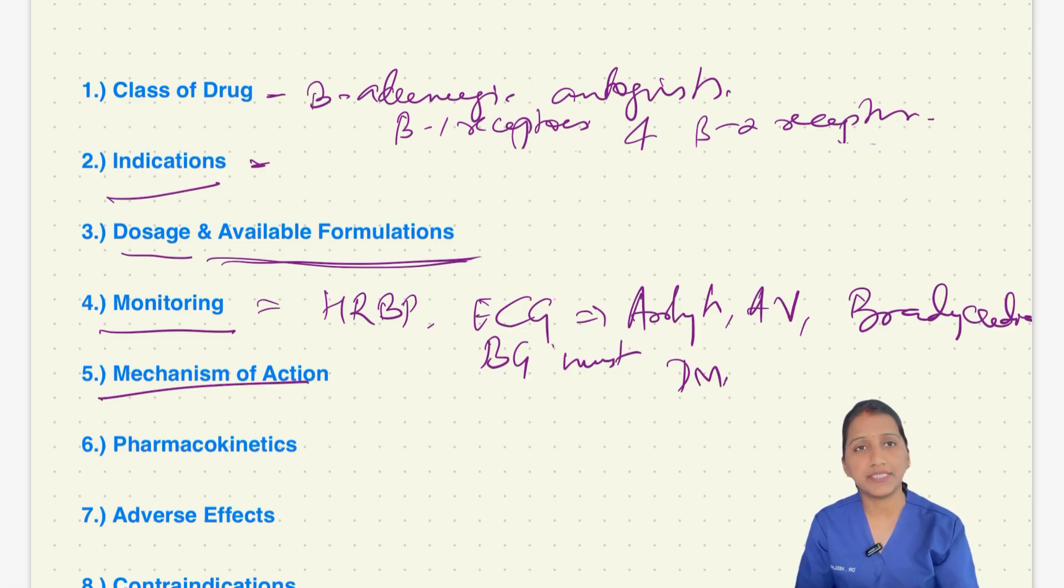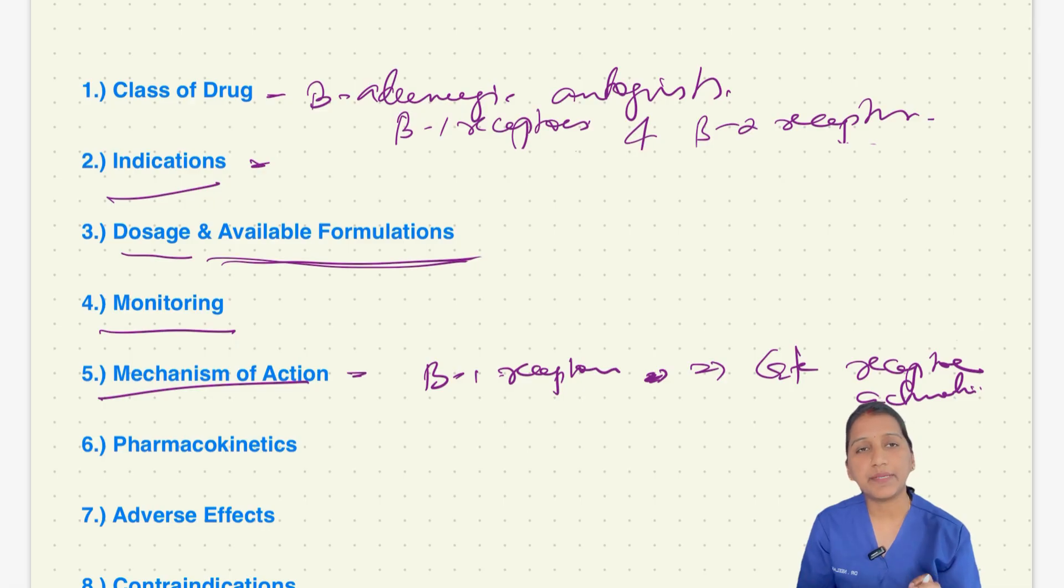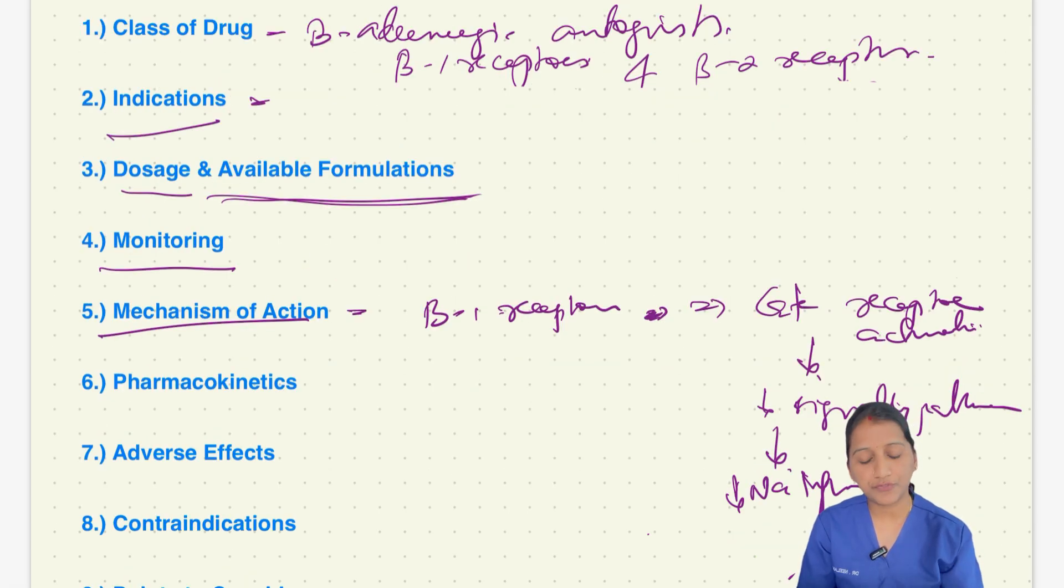Next, coming to mechanism of action. Metaprolol basically binds to the beta-1 adrenergic receptors on the surface of cardiac cell. It blocks the catecholamine receptor activation by competing for the same receptor. It reduces the intracellular signaling pathway mediated by cAMP and protein kinase by decreasing the sodium influx during the phase IV of the cardiac cycle. Metaprolol slows down the firing rate of the pacemaker thus decreasing the heart rate.